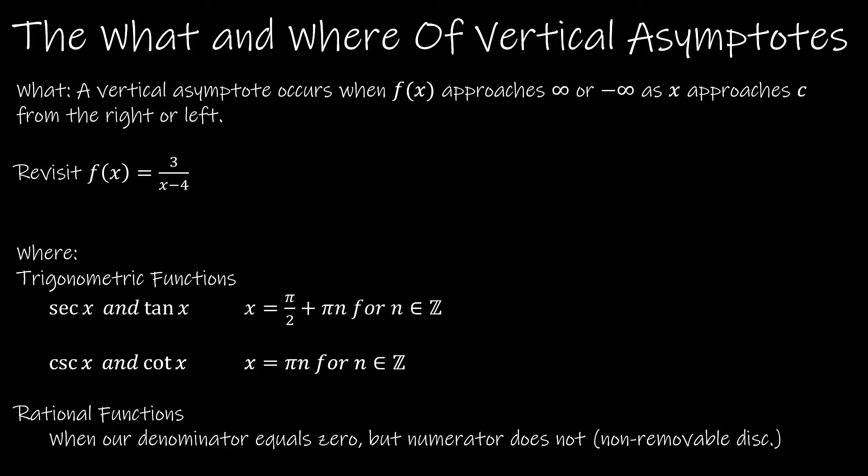We're going to finish out section 1.5 by talking about vertical asymptotes. So this is the what and the where of vertical asymptotes. It's a very good idea to understand where you might find asymptotes, where you should be looking for them. A vertical asymptote occurs when f(x) approaches infinity or negative infinity as x approaches c from the left or from the right.